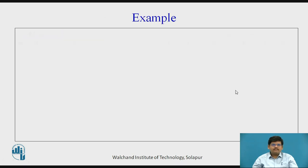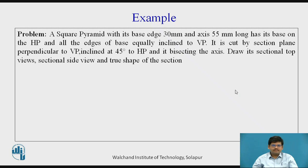Let us consider an example. As we all know, a pyramid has a base and an apex at the top. The base can be of any shape — either a square, triangular, hexagonal, pentagonal, and so on. It has fixed edges, inclined edges, and vertical edges. It has sides for the base.